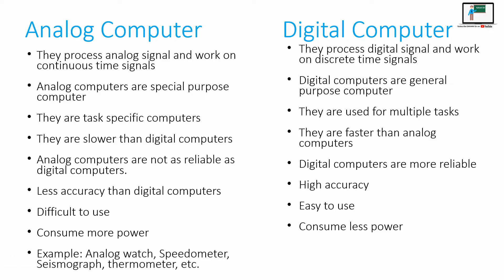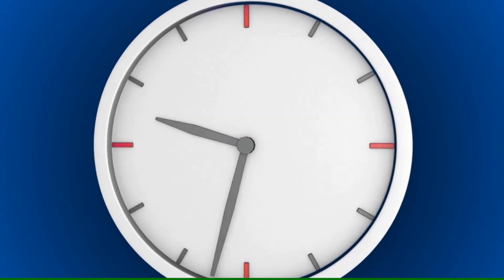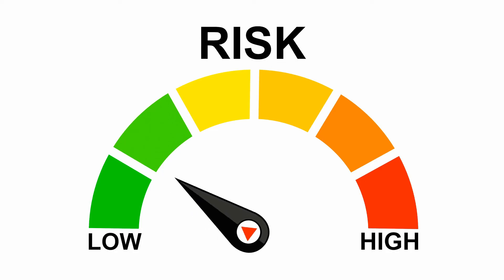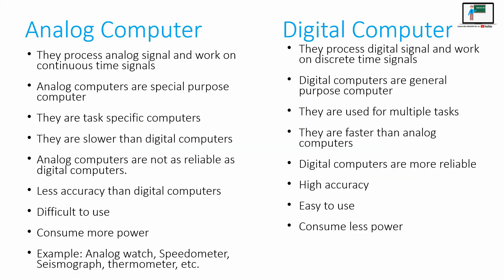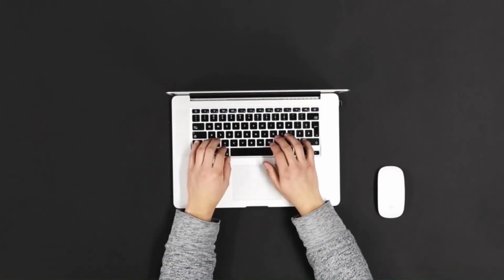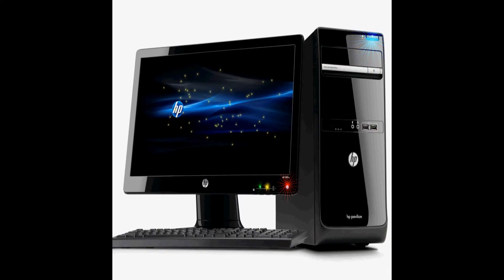Some examples of analog computers include the analog watch, the speedometer used to measure speed, the seismograph, and the thermometer. Whereas digital computers include laptops, desktops, and the smartphones that we use — all these devices are digital computers.